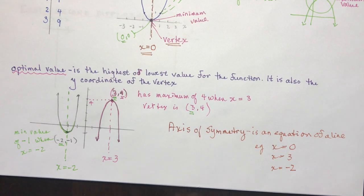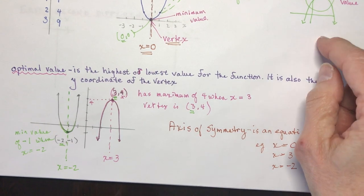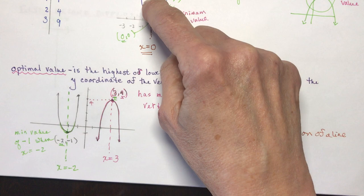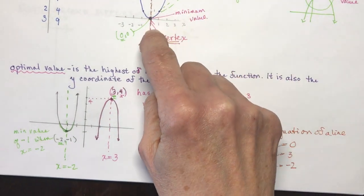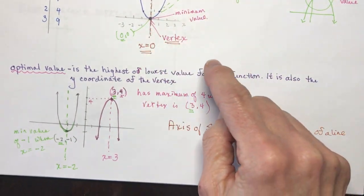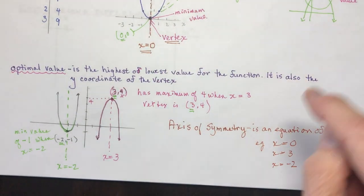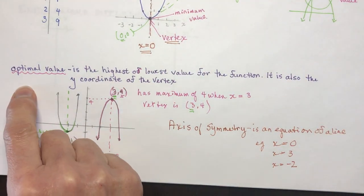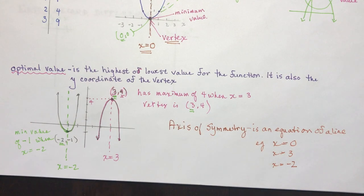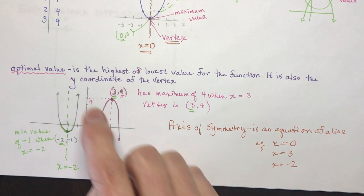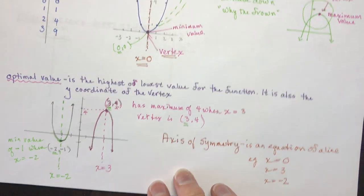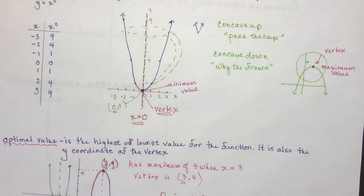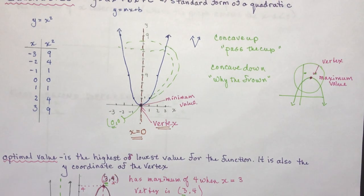To summarize the basics: you need to understand concave up versus concave down, what a vertex is, minimum and maximum or optimal values, and you should be able to graph y equals x squared.